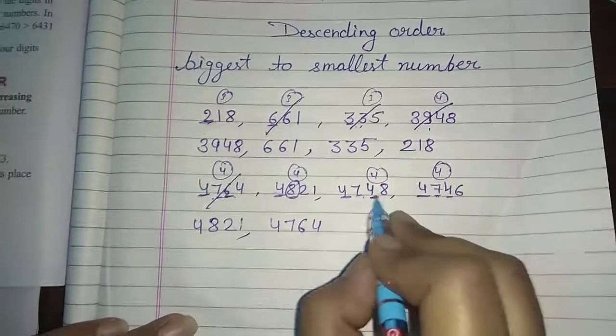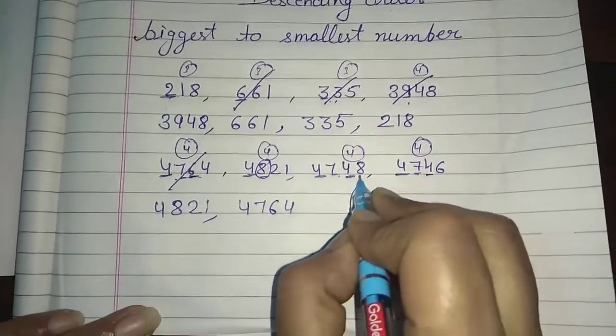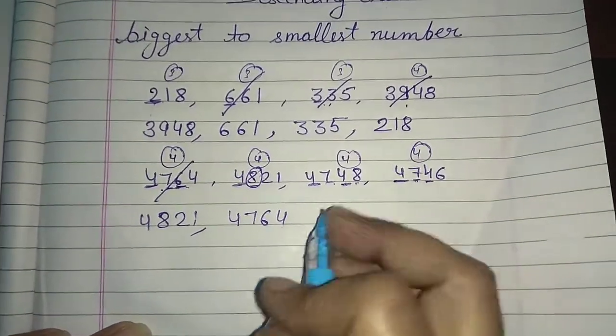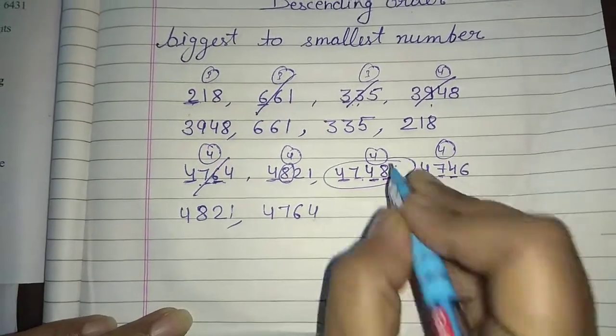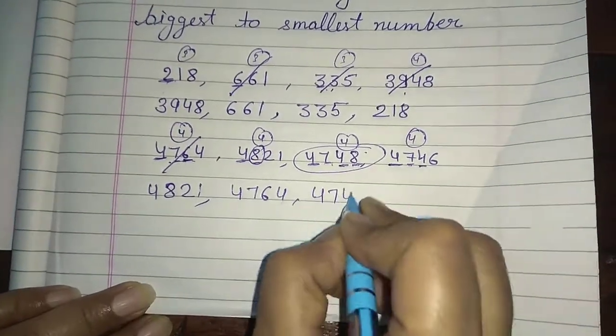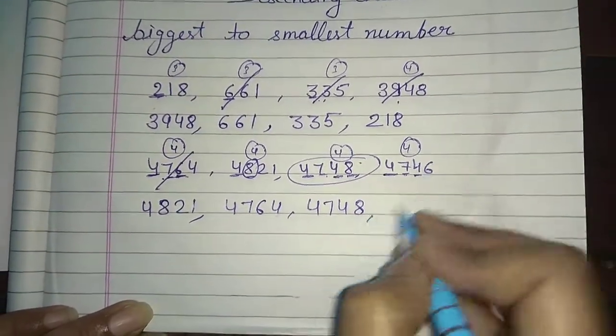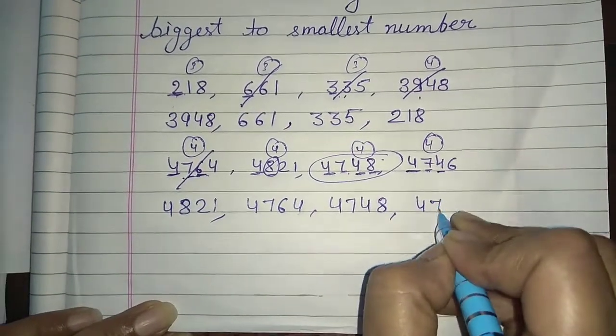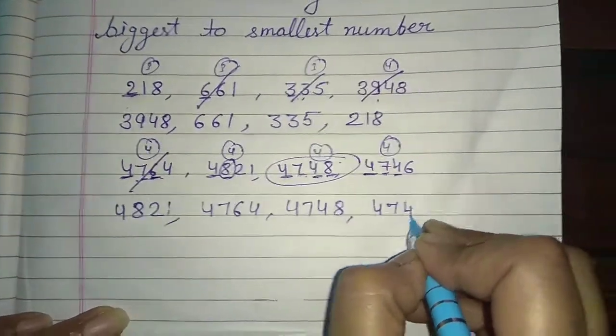Now what comes? Four and four same. So now what will we see? Ones we will see. In ones what is there? Eight is big. So what will be your number? Four thousand seven hundred forty. And last and remaining number, four thousand seven hundred forty-six.